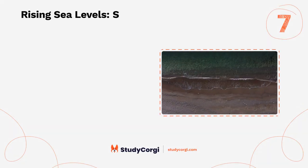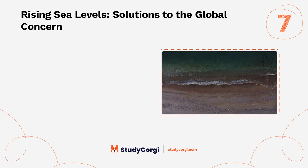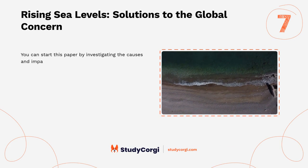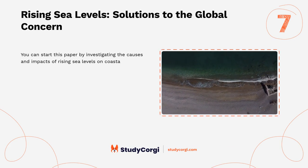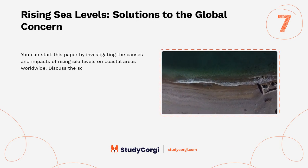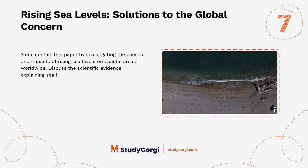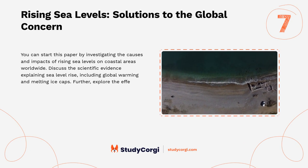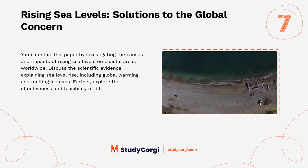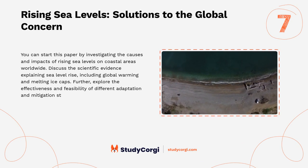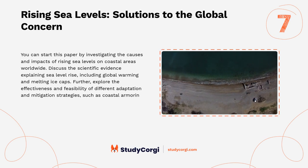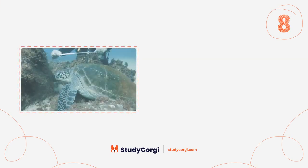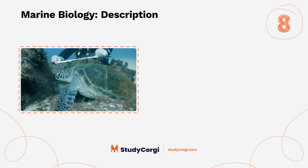Rising sea levels — solutions to a global concern: You can start this paper by investigating the causes and impacts of rising sea levels on coastal areas worldwide. Discuss the scientific evidence explaining sea level rise, including global warming and melting ice caps. Further explore the effectiveness and feasibility of different adaptation and mitigation strategies, such as coastal armoring.